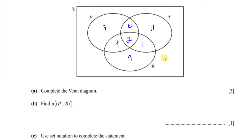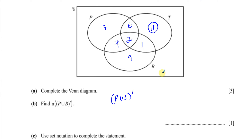Part B asks for the number in (P union B) complement — those outside P union B. P union B covers all of the plane and boat circles. The complement is everything outside that, which is just the 11 students who travelled by train only. So the answer is 11.